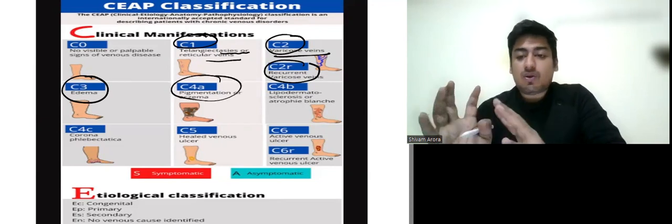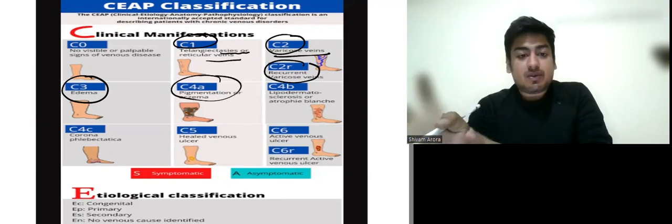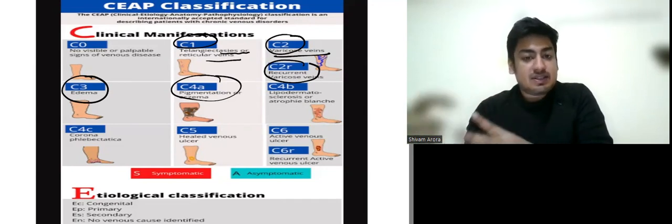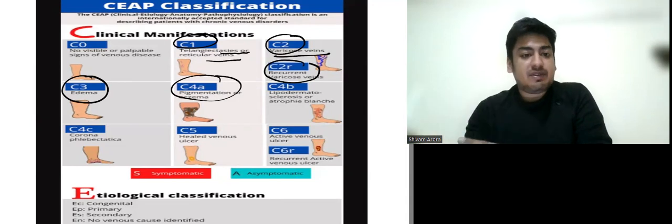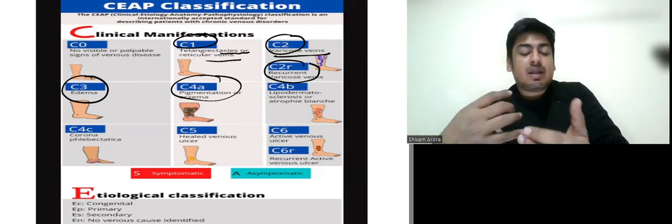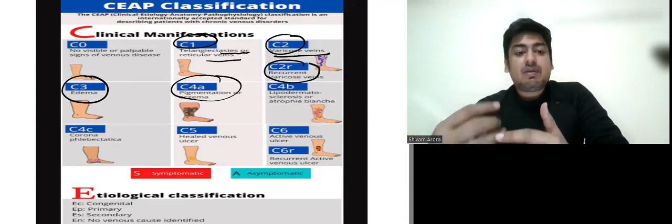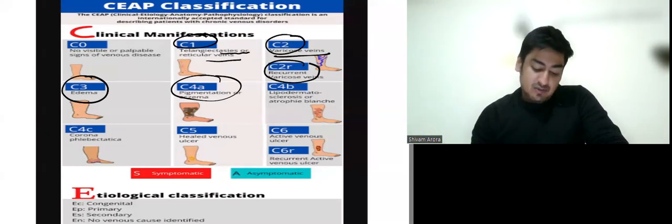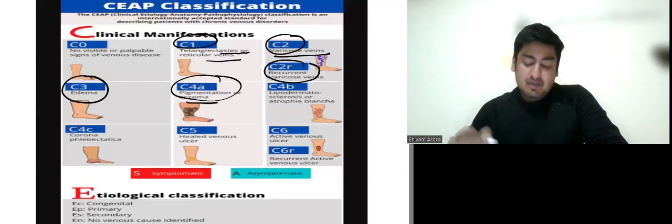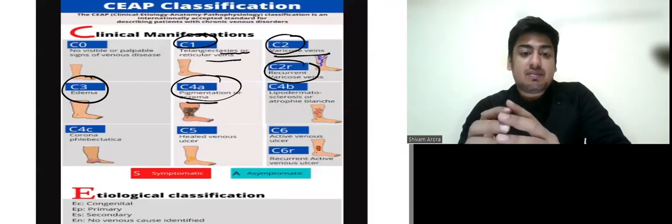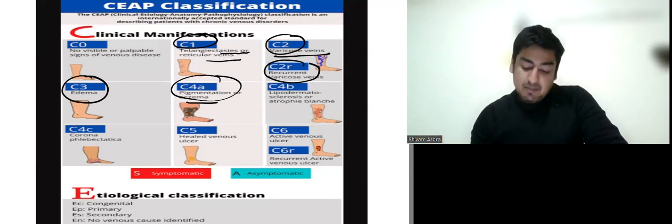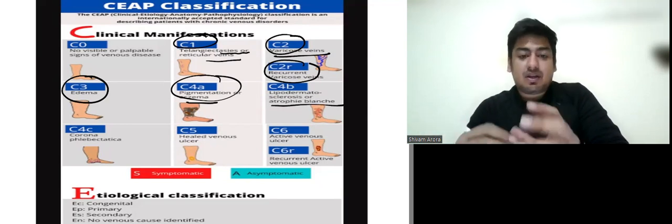C4A what will happen? Since there is long-standing edema and varicose veins and long-standing stasis of blood in veins, then edema will develop. In long-standing edema there are color changes, skin changes. So 4A is pigmentation and eczema. If there is long-standing eczema, then there is dermis involved. What is the dermis involved? Lipodermatosclerosis and atrophie blanche.